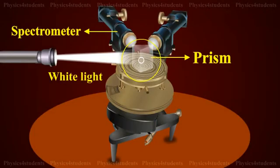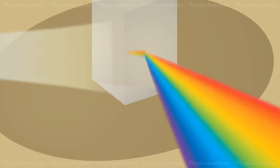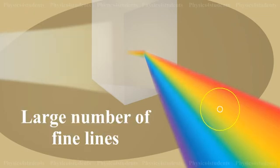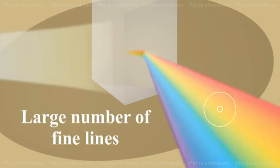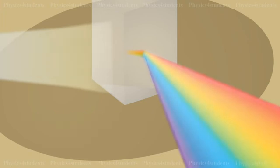When the bands are examined with high-resolving power spectrometer, each band is found to be made of a large number of fine lines very close to each other at the sharp edge but spaced out at the other end.